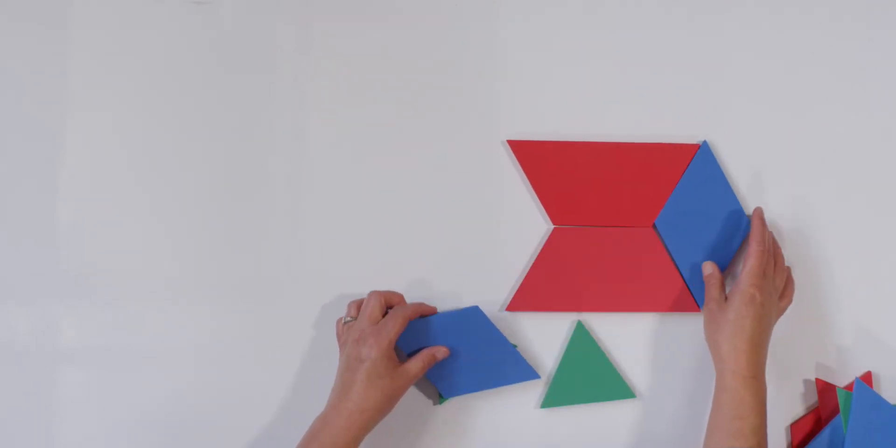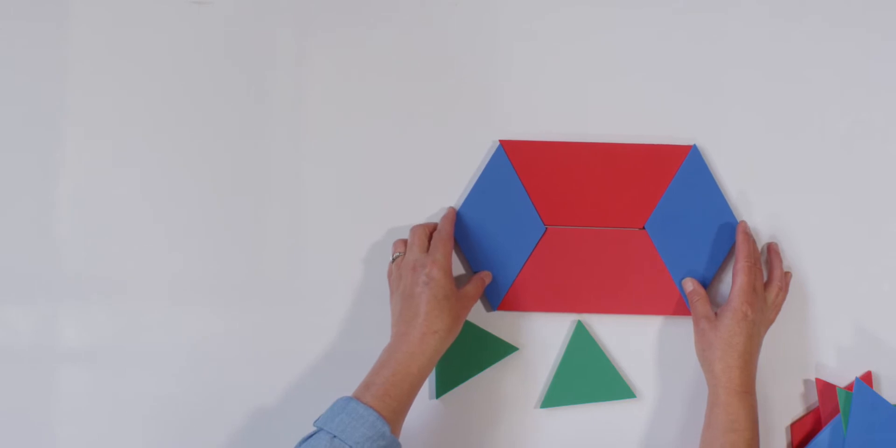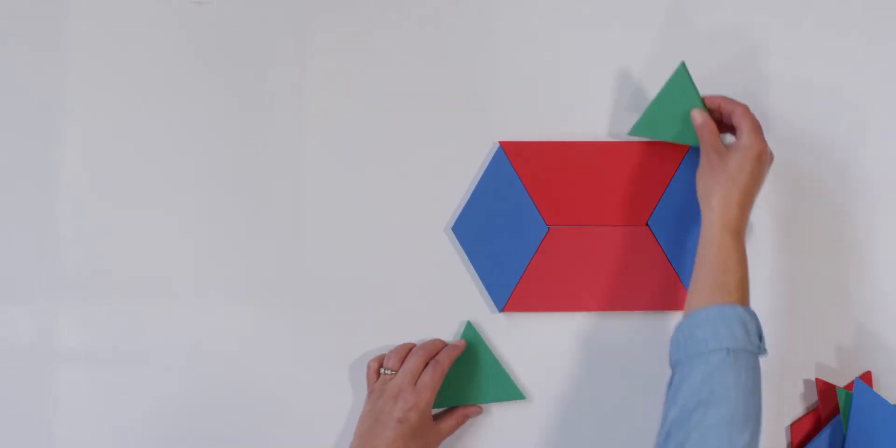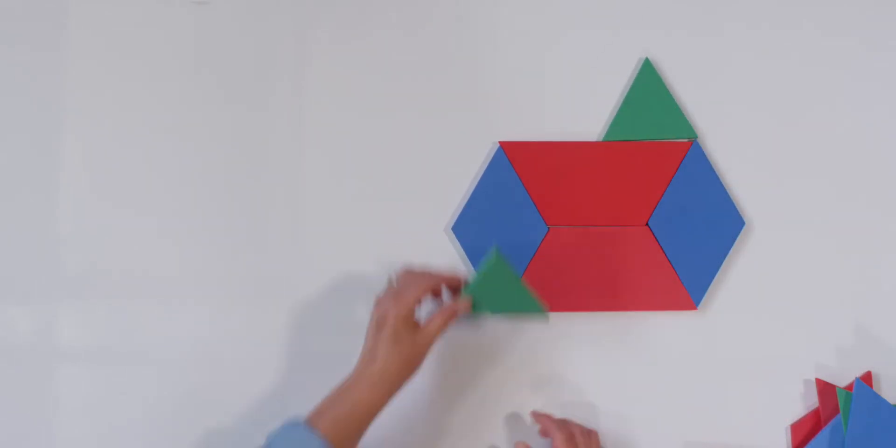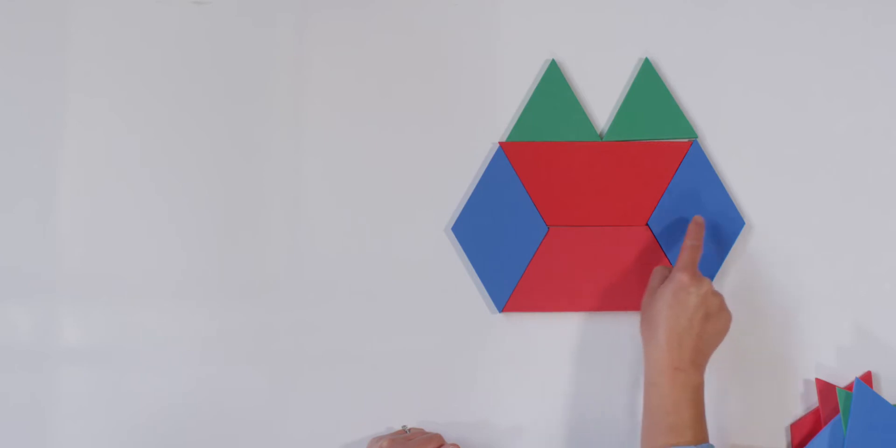And then my blue shapes. And then at the top, I am adding some green shapes. How many shapes did I use? Let's count. One, two, three, four, five, six.